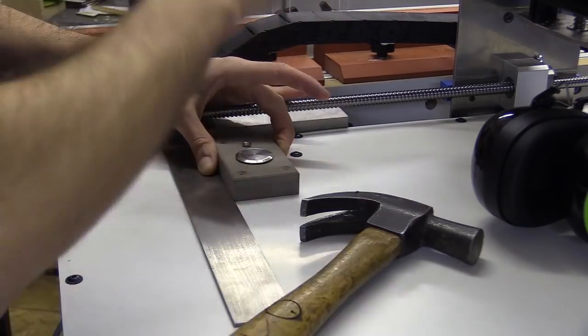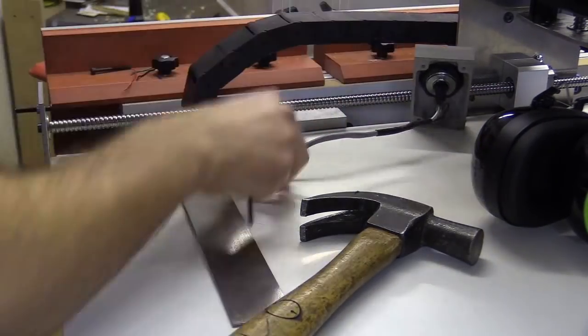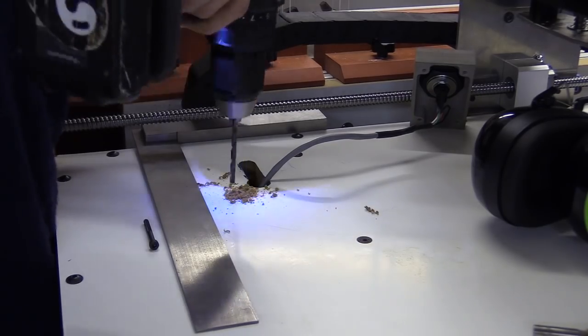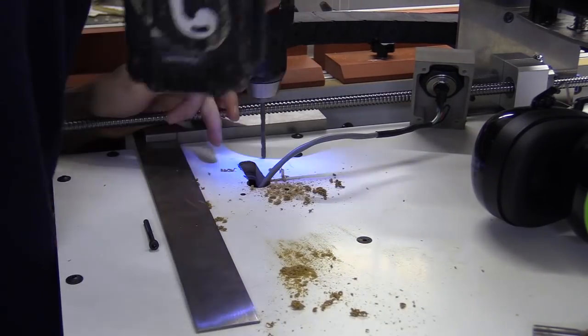I then marked through the openings of the Valcromat piece using a parallel punch and drilled the holes with which to secure the probe button down to the sub waste board.